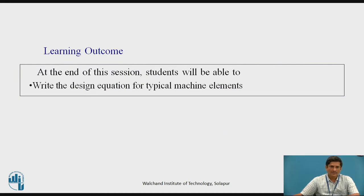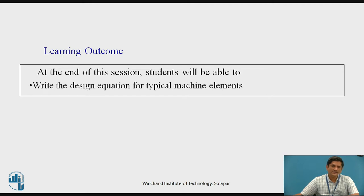At the end of this session, you will be able to write the design equation for typical machine elements. The typical elements considered are under tension, under compression, under bending, and under shear. We will be discussing some cases related to tensile failure in this part.